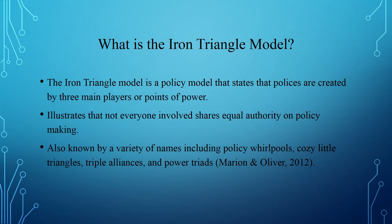The Iron Triangle Model is the second type of policy model. It states that policies are created by three main players or points of power, and it shows that not everyone involved shares equal authority in policy making. This varies greatly from the garbage can model, where everyone had a voice. In this method, only three points have the main influence over policy. The Iron Triangle Model can also be called policy whirlpools, cozy little triangles, triple alliances, and power triads.